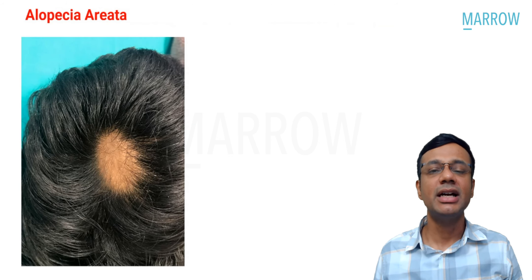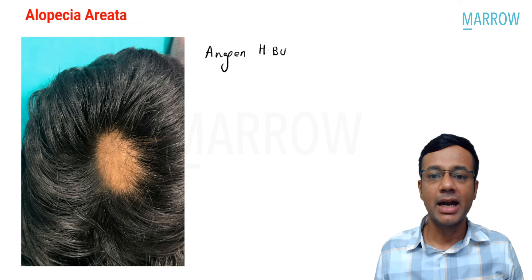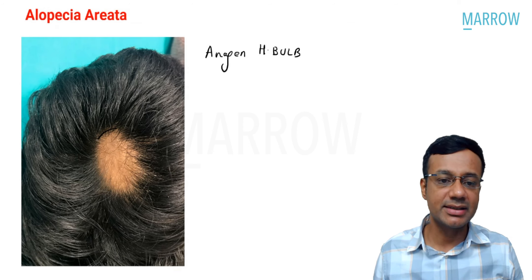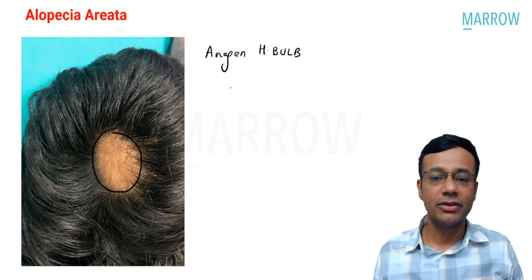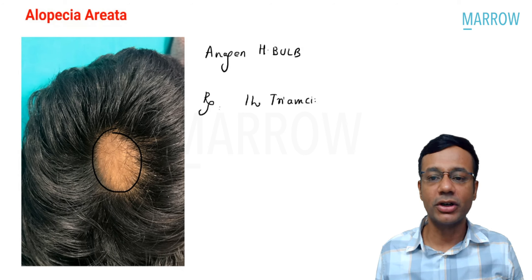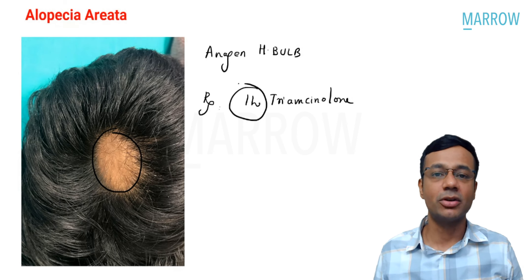Alopecia areata is an autoimmune disorder that targets the anagen hair bulb. The patient presents with a circular area of complete hair loss, which is a very characteristic finding. The treatment of choice is intralesional triamcinolone — we give corticosteroids, with the best route being intralesional administration.